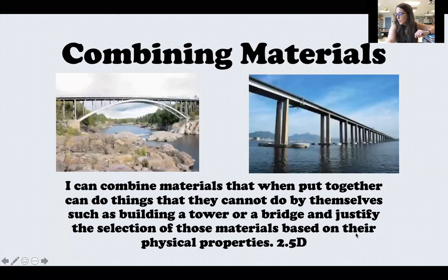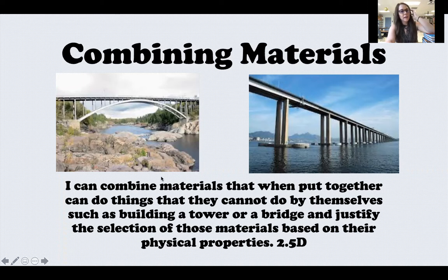An example of this is bridges. Bridges are made up of lots of different materials that all work together to do the job of the bridge and hold up cars or hold up people or hold up trains. So let us go get started. We're going to learn a little bit about bridges and then we are going to test out some bridges. This is called combining materials and here's your target: I can combine materials that when put together can do things that they cannot do by themselves, such as building a tower or a bridge, and justify the selection of those materials based on their physical properties.